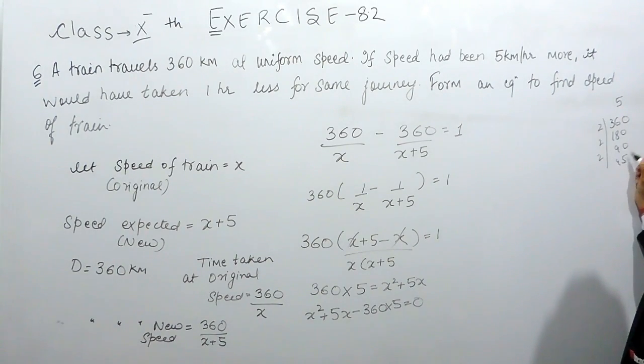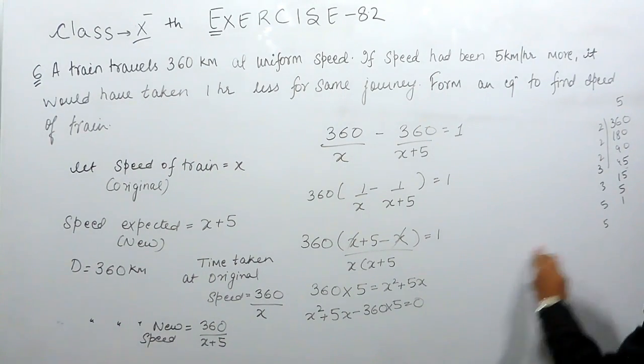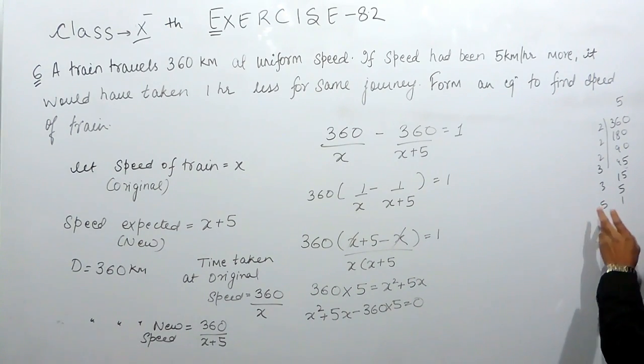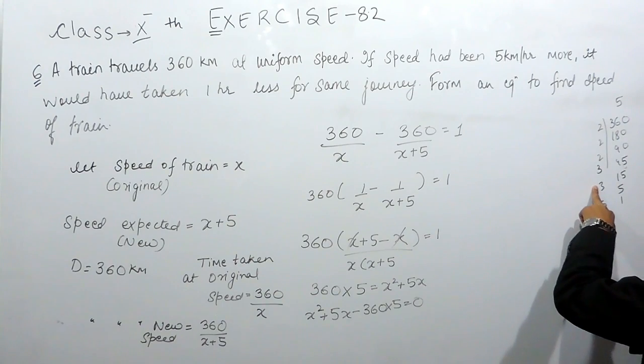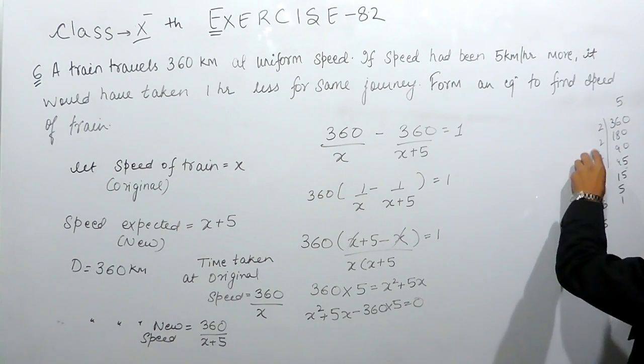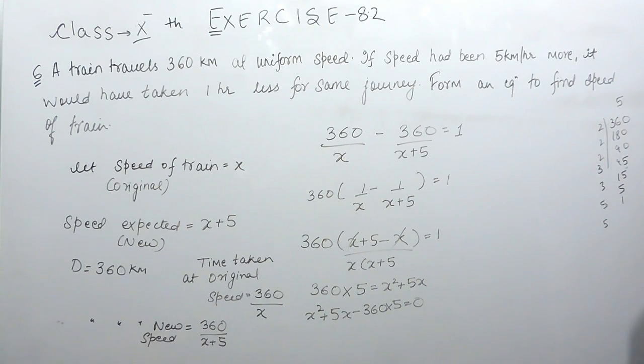And we'll get: 5 is always there, 360 to 180 times 2, 90 times 2, 45 times 3, 15 times 3, 5 times 3, and 5 one time, and 5 was already there. Now we have to arrange them in such a manner that we get 5. This can be 5 times 25 multiplied by 3 that will be equals to 75, and this will be equals to 8 multiplied by 3 that is 24.